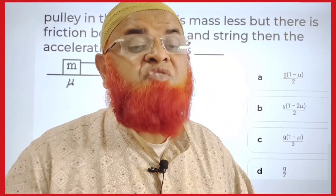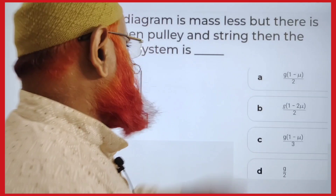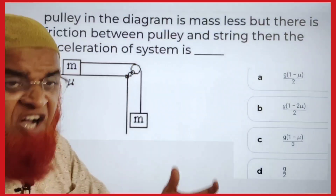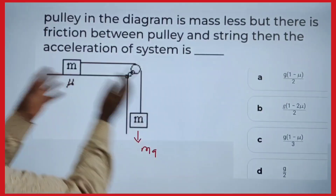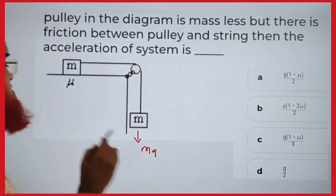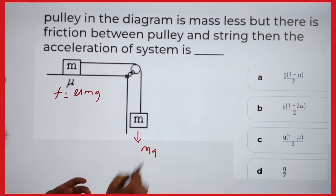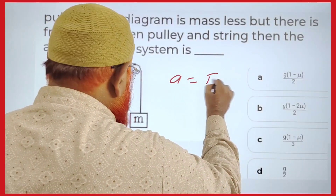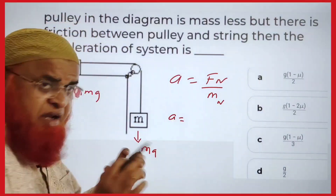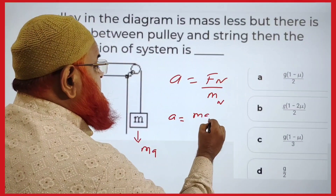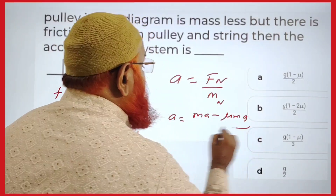How can you solve this problem without using a free body diagram in just five seconds? One body of mass m is hanging downwards, taken as mg. One body is resting on the table having certain friction, taken as μmg. Acceleration is nothing but net force divided by net mass. Net force means the difference: mg minus μmg.